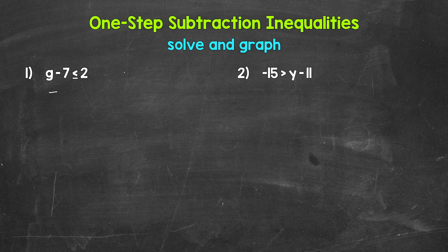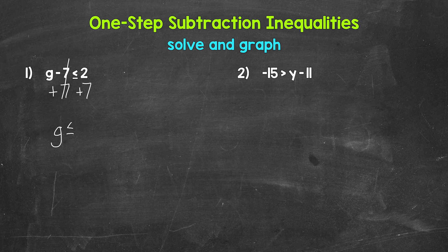That's addition. So let's add seven to the left side of the inequality. Whatever we do to one side of an inequality, we must do to the other in order to keep it balanced. So add seven to the right side as well. These sevens cancel each other out — g is now isolated. So we have g is less than or equal to nine. And that's our answer.